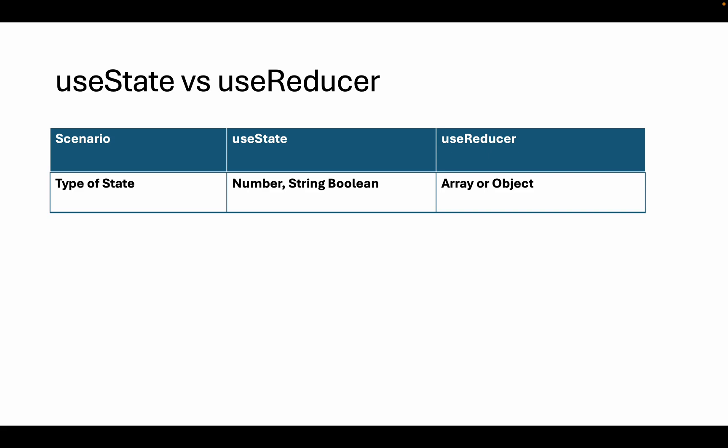For example, if you are maintaining a value for a counter in state — since it's a numeric value — it's better to use the useState hook. In case you are maintaining data for a user, for example the first name, last name, email, and phone number — that's a kind of object — so in that kind of scenario it's better to go with the useReducer hook.